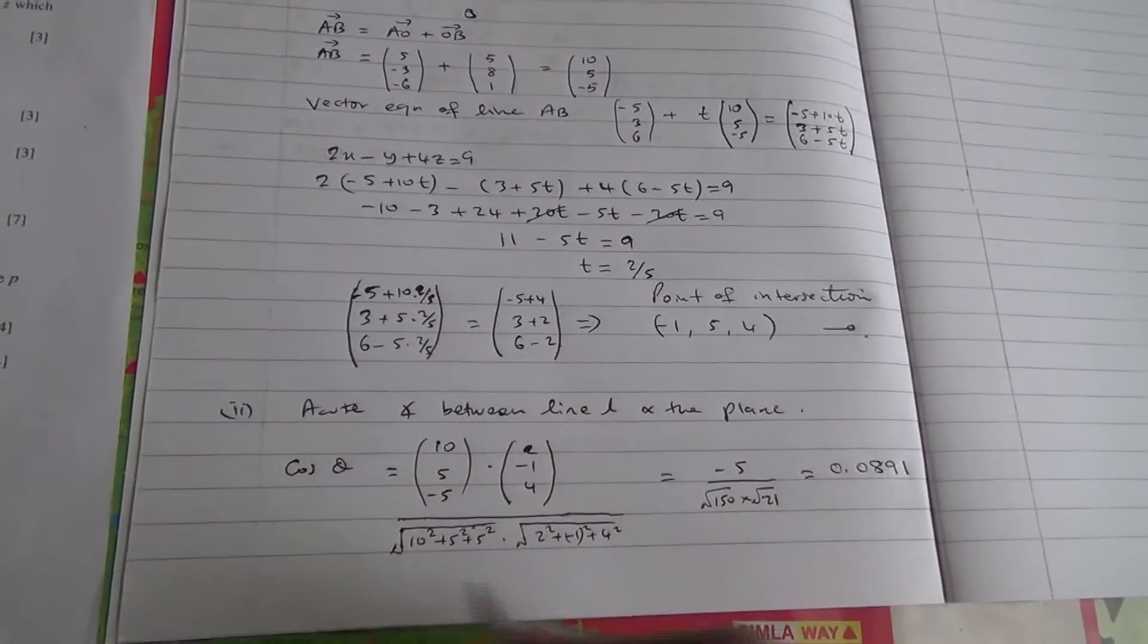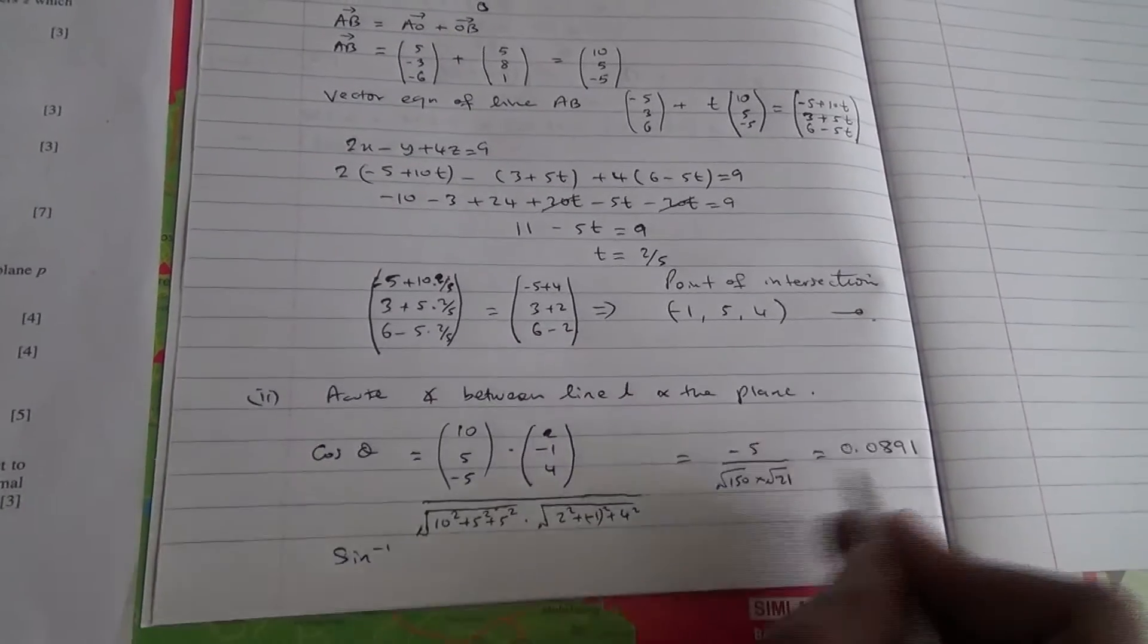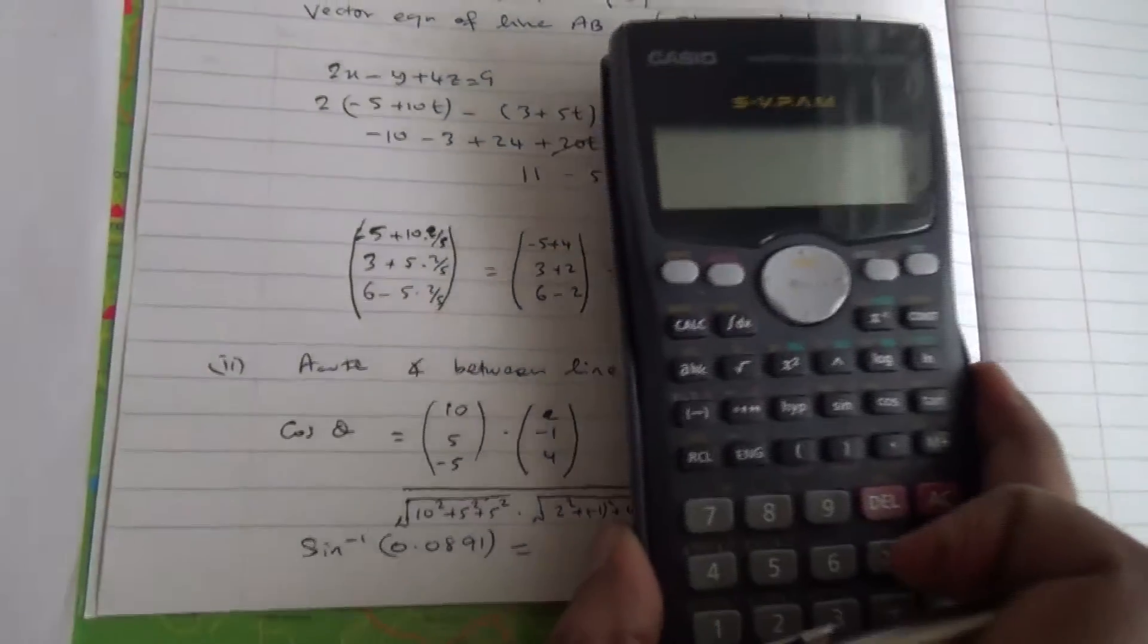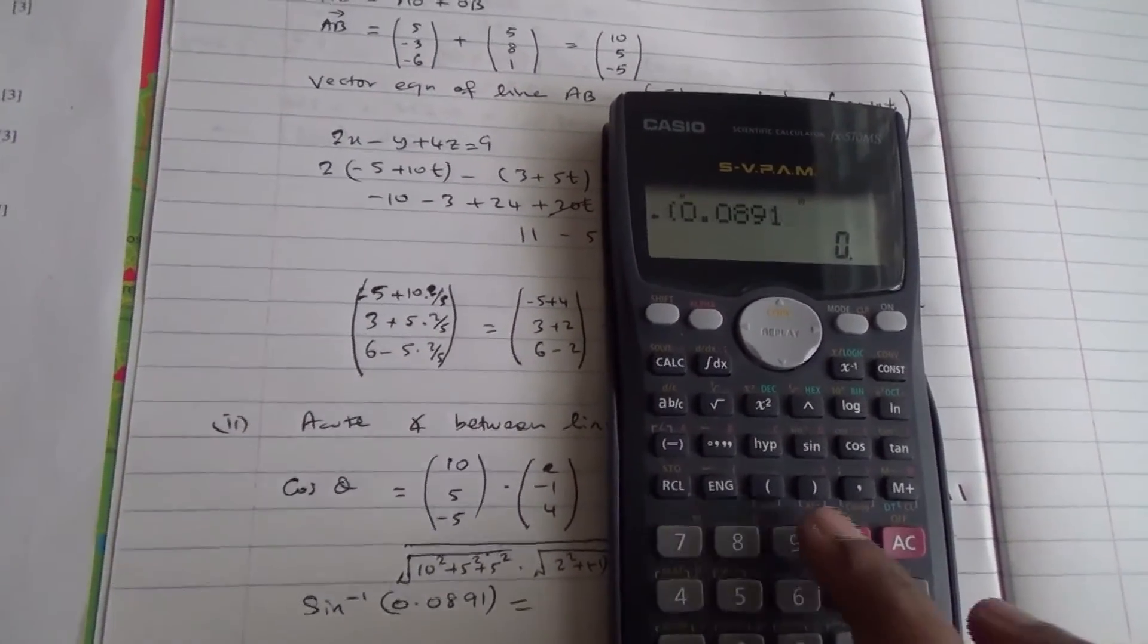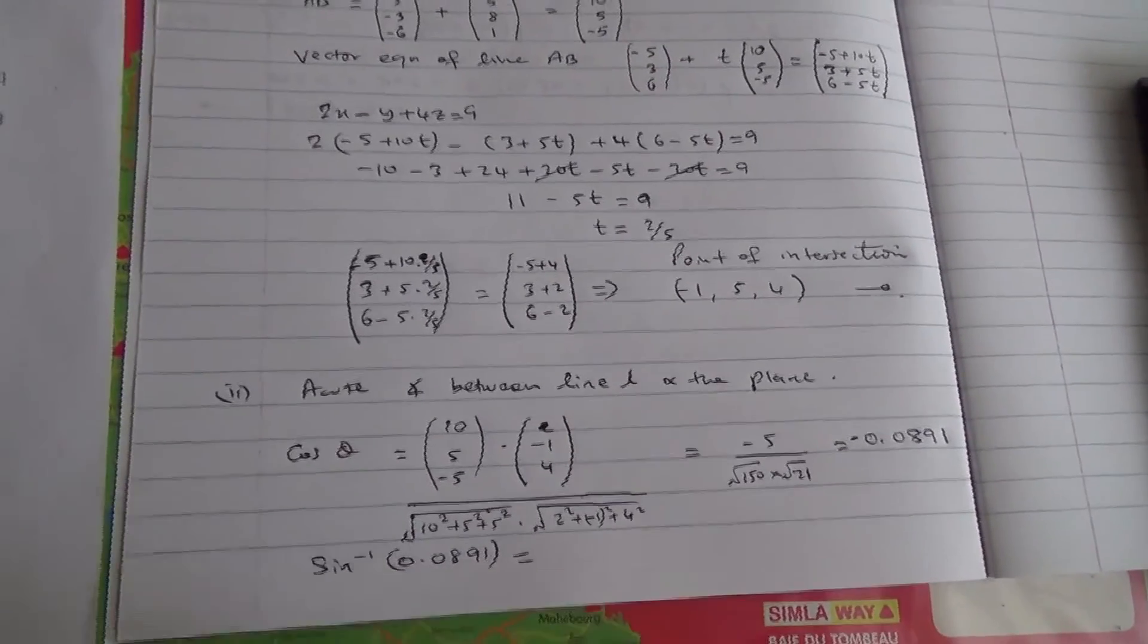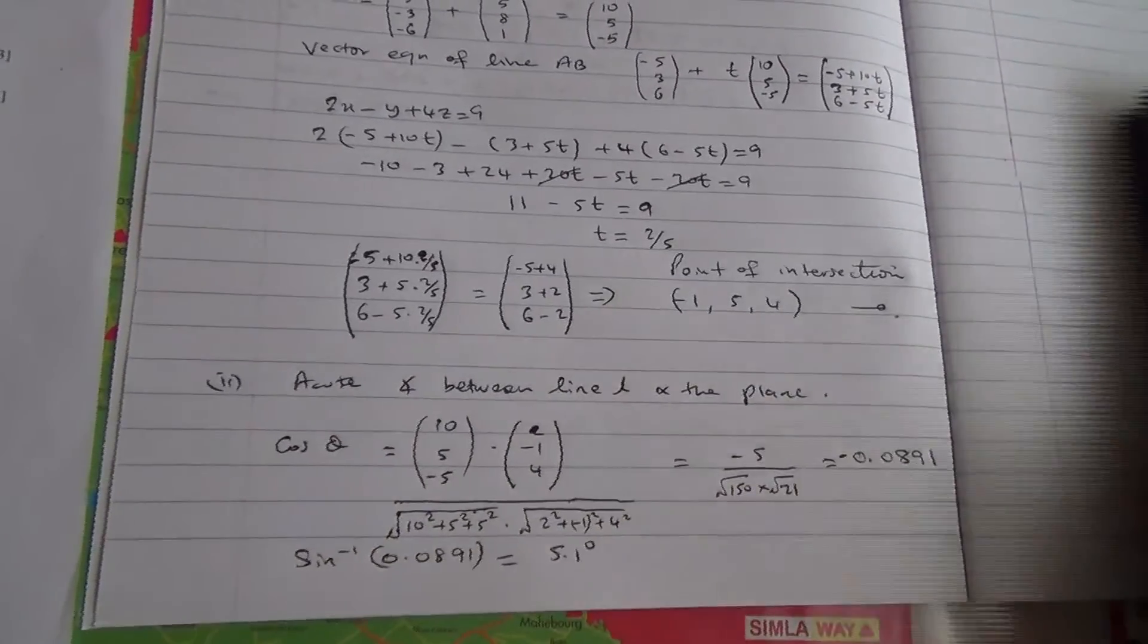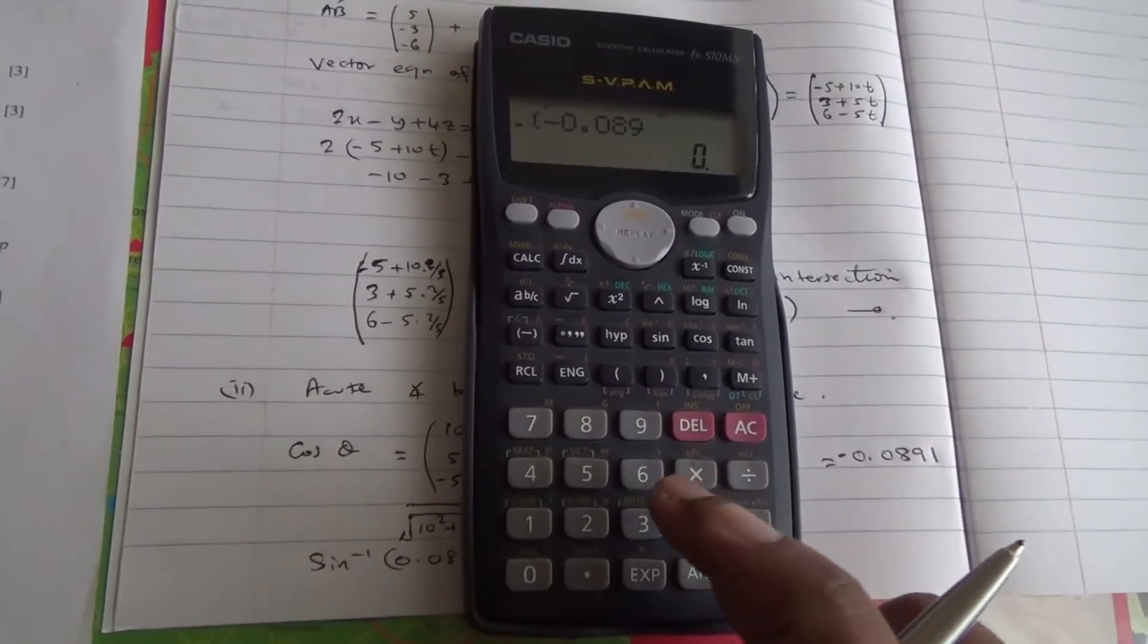If you're looking for the acute angle, maybe instead of cos, you can say probably sine inverse of this, of 0.0891, and if we check it out on your calculator, which is going to give you 5 degrees. But remember this is minus, however, if you take the sine of it, you take the positive.